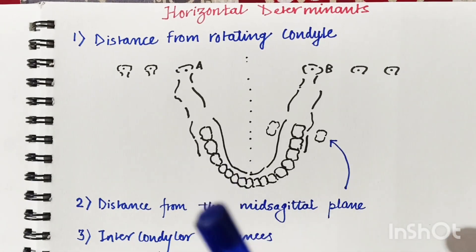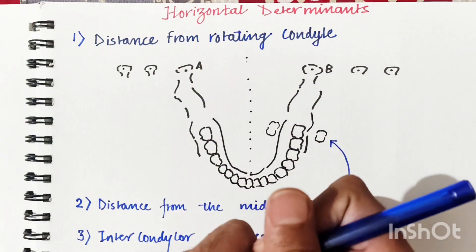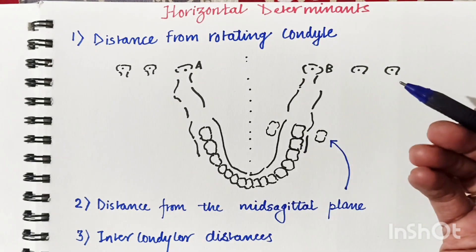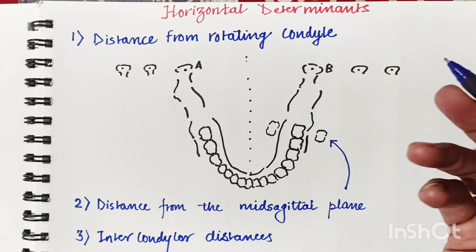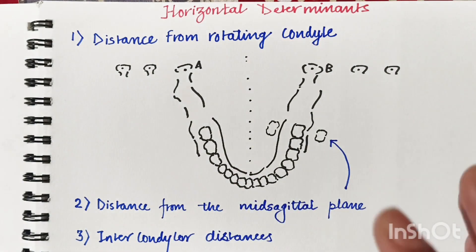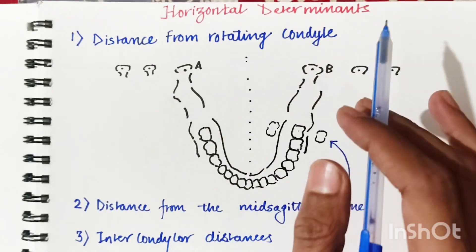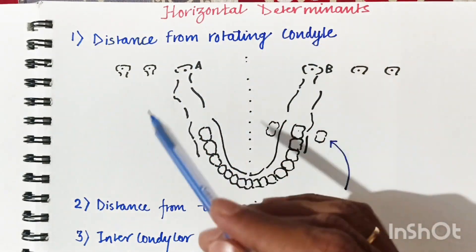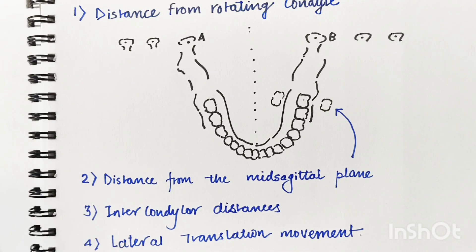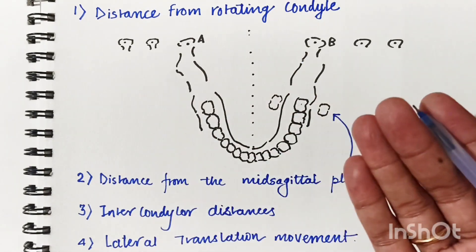Today we will understand the determinants of occlusal morphology — both horizontal and vertical. Occlusal morphology of posterior teeth includes two aspects: the height of the cusps and the shape of the ridges and grooves. Horizontal determinants determine the shape of the grooves, while vertical determinants determine the height of the cusps.